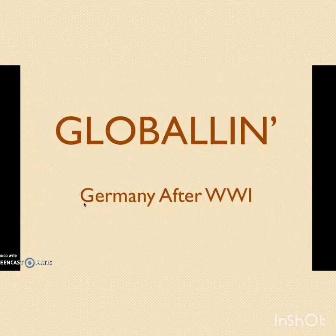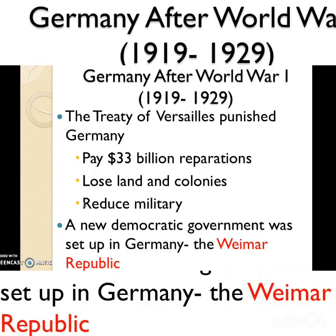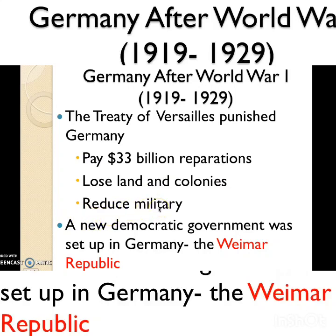World War One ends with the blame placed on Germany. The treaty that ends the war is called the Treaty of Versailles. The treaty forced Germany to pay 33 billion dollars in reparations — remember, reparations means war damages. Germany also loses land and its colonies, and its military is significantly reduced.